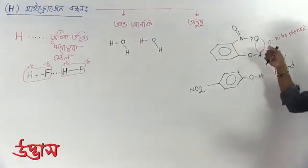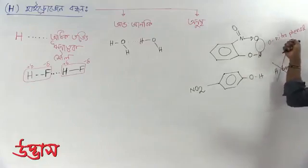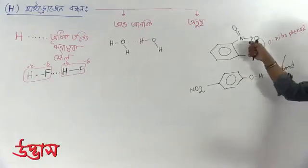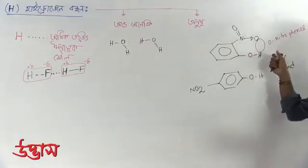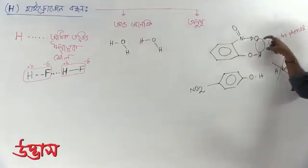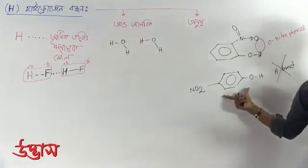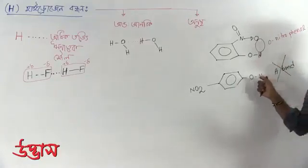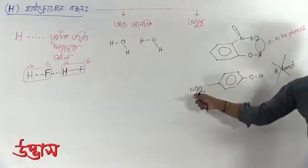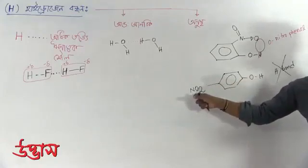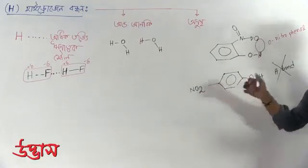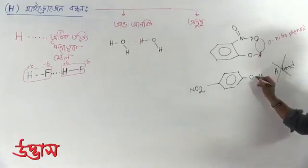This is very interesting. In ortho-nitrophenol, we see the oxygen and hydrogen are close together — that is very good for forming a hydrogen bond. And we know that there is a hydrogen bond present. As you can see, when the electronegative atom is closer to the hydrogen, then there is hydrogen bonding.